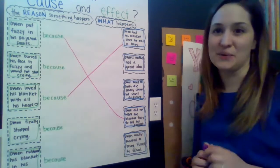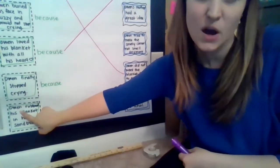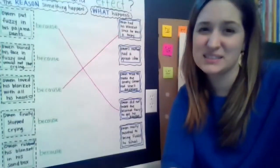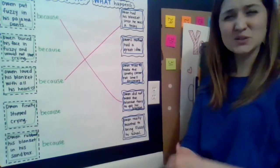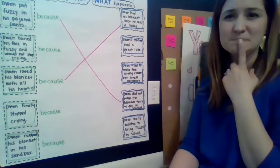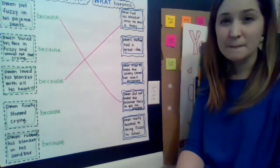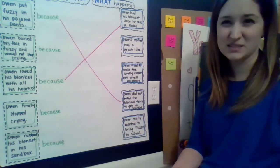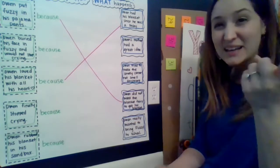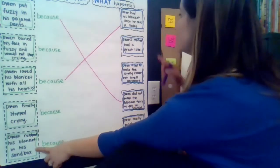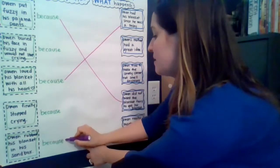Let's keep going and reading some other ones. Let's take a look at this bottom one: Owen rubbed his blanket in his sandbox. Why would he do that? Do you remember? The corner was in vinegar and he didn't want it to smell anymore. That's right. So Owen rubbed his blanket in his sandbox because Owen tried to make the smelly corner not smell anymore. Good thinking.